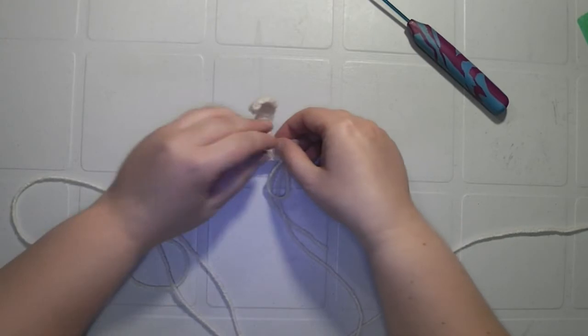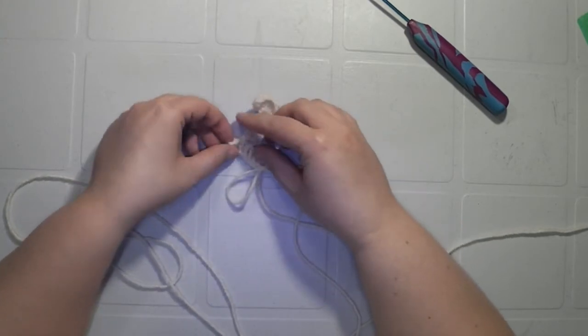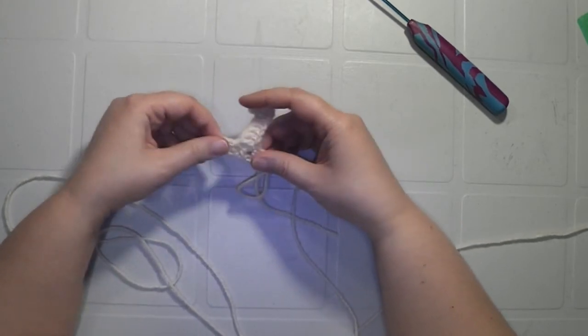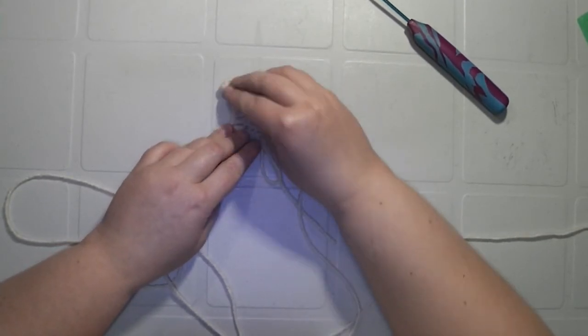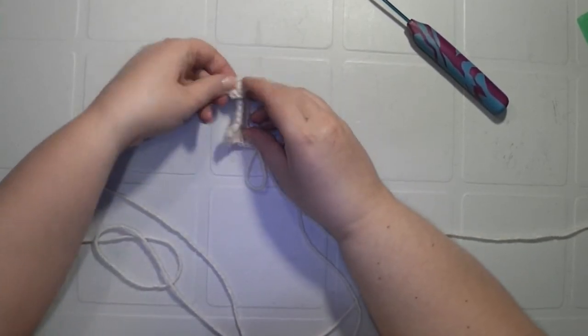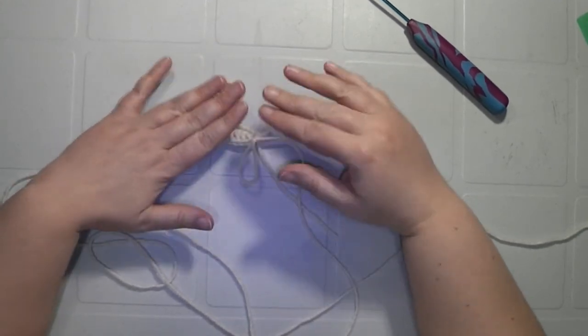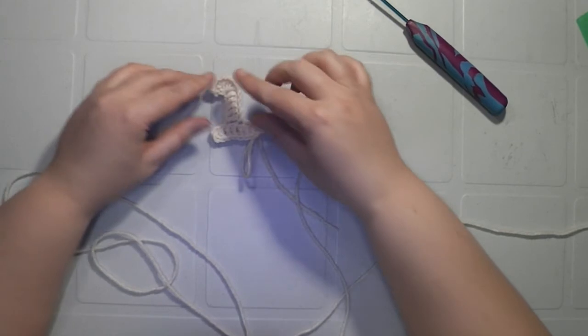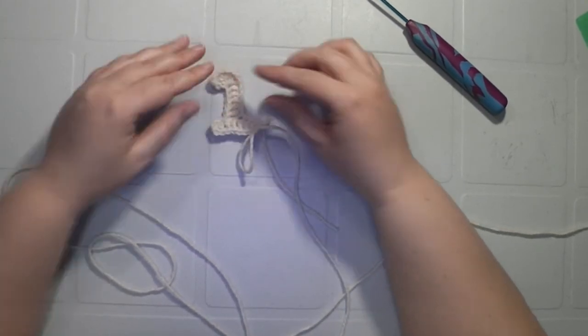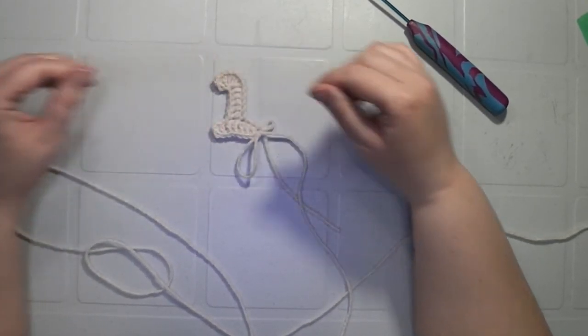So you can see here that you have the number one. Sometimes it takes a little bit of kind of stretching and setting because they're all such tiny stitches and they all want to curl around, but you can block it or you can iron it with a mist on your iron setting. But that is your number one.